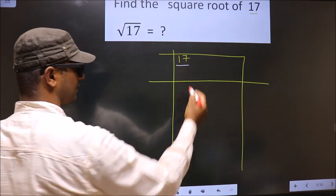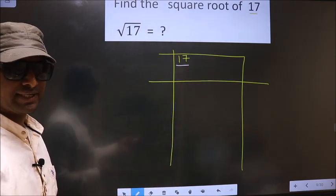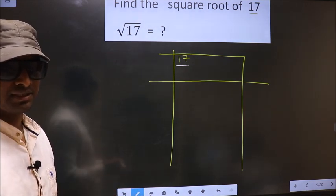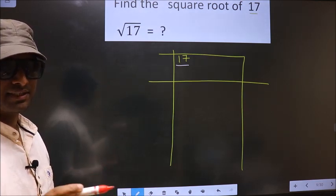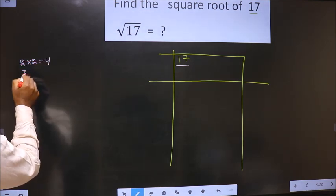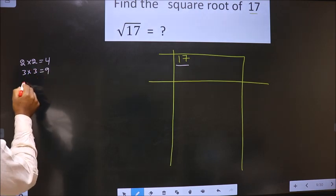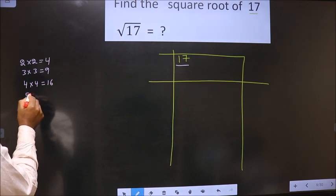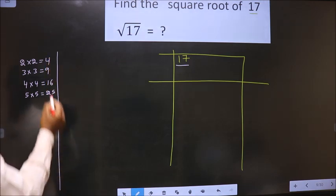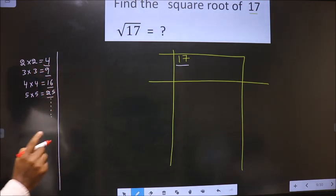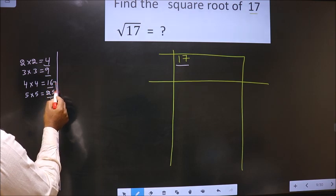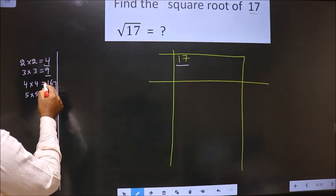Here we have 17. 17 is not a perfect square. So now we should check which two perfect square numbers 17 falls between. The perfect square numbers are: 2 into 2 is 4, 3 into 3 is 9, 4 into 4 is 16, 5 into 5 is 25, and so on. These numbers are called perfect squares. Here we have 17 — it lies between 16 and 25. So we take the smaller number, that is 16.